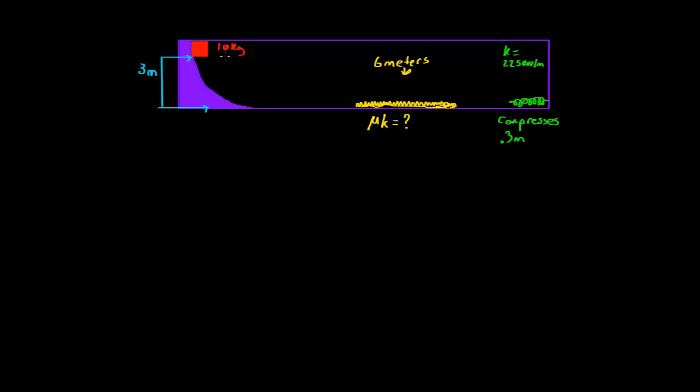we've got a 10 kilogram block, and it is raised 3 meters high. Now this block is going to slide down this little ramp, and we're assuming that the ramp and everything is frictionless with the exception of this friction surface, which is 6 meters long.